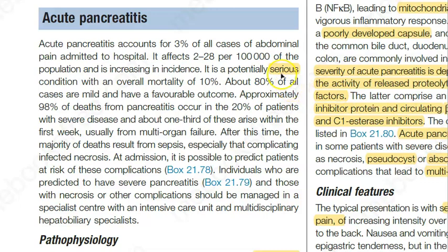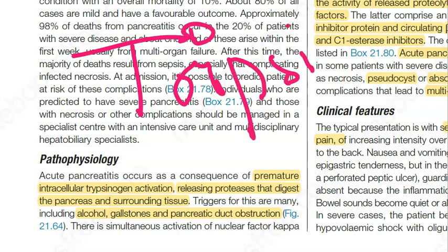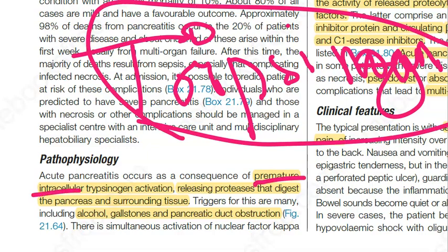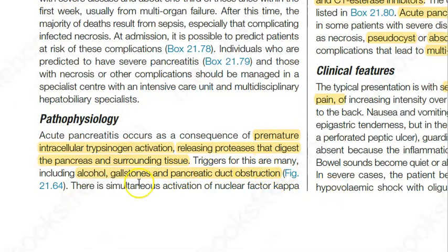In acute pancreatitis, the enzymes the pancreas secretes — for example trypsinogen — are supposed to be released in inactive form. They should go into the duodenum, get activated, and digest food. But what happens instead is premature intracellular trypsinogen activation. The trypsinogen becomes trypsin and starts digesting the pancreas itself.